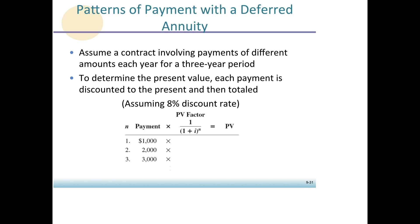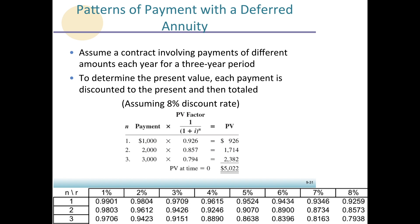We look into our present value factor tables, and at eight percent we find our factors. For year one the factor is 0.9259, for year two it's 0.8573, and for year three it's 0.7938. We multiply those factors times the lump sums for each period and find the present value of these three lump sums to be five thousand and twenty-two dollars.